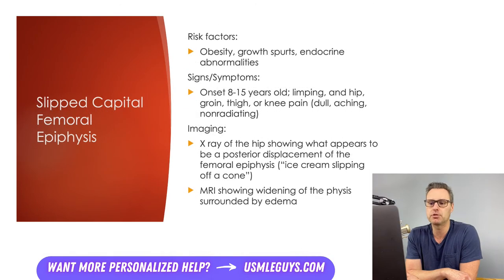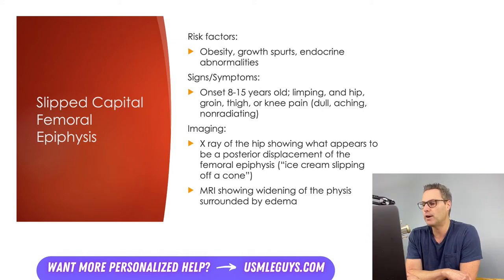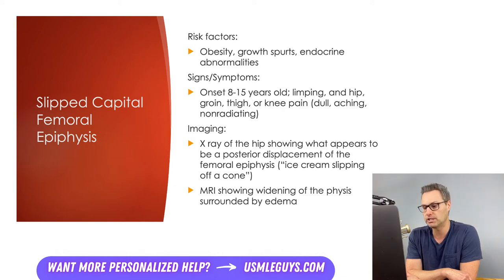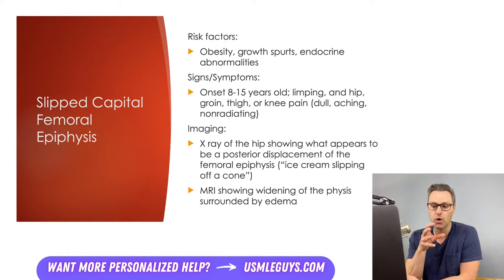Next up is slipped capital femoral epiphysis (SCFE), characterized by anterolateral and superior displacement of the proximal femur distal to the growth plate. Risk factors include obesity, growth spurts, and endocrine abnormalities like growth hormone deficiency or hypothyroidism. The typical age of onset is between 8 and 15 years, but most patients are between 12 and 13. This patient presents with limping and vague pain in the hip, groin, thigh, or knee — and importantly, the pain can be isolated to just the knee even though it is hip pathology.